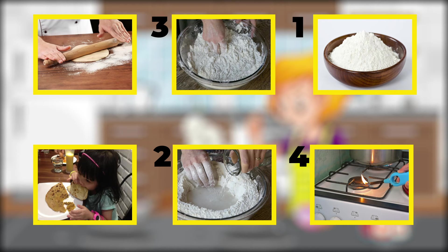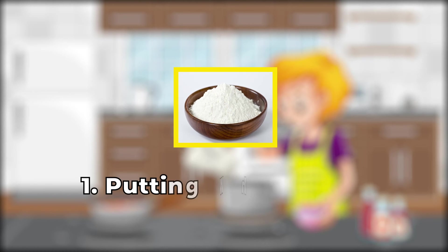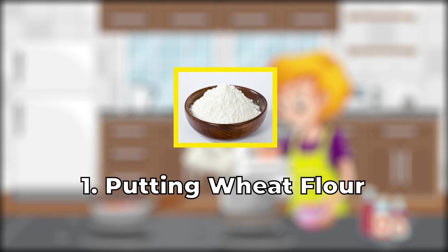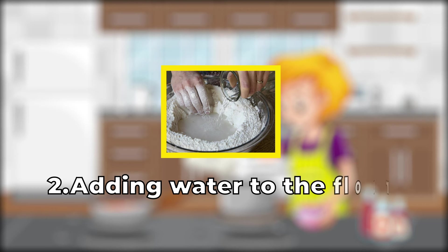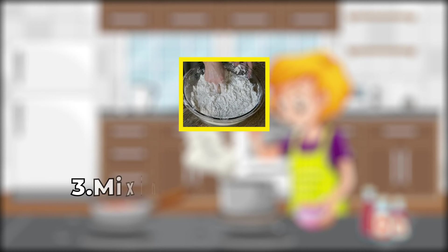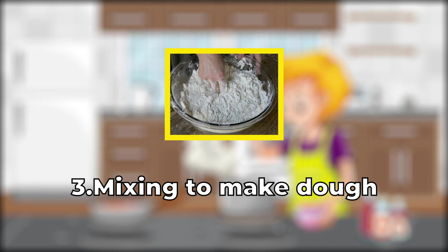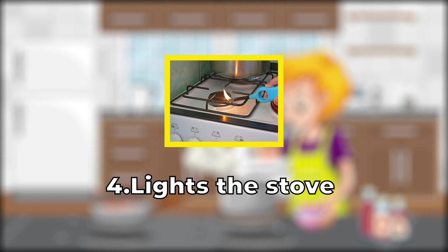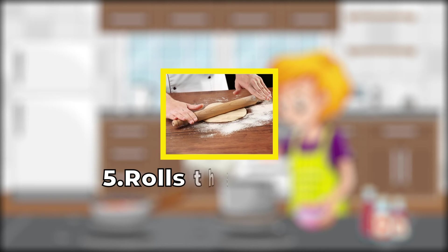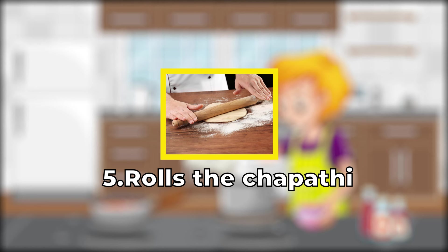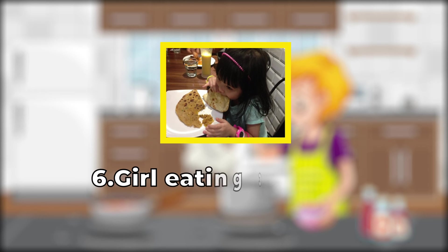Can you arrange the steps according to their number order? What is the first activity? Putting wheat flour in a plate. Now adding water to the flour — second activity is done. The third one is mixing that flour to make a dough. What is the fourth activity? Lighting the stove. What is the fifth one? Rolling the chapati. Now the chapati is ready. Finally, serving to Samanda.